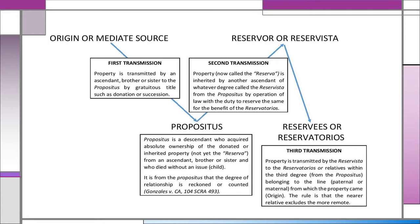Here is an illustration of Reserva Troncal. There are three transmissions. The first is from the origin to the propositus. In the first transmission, the property is transmitted by an ascendant (origin), brother or sister, to the propositus by gratuitous title such as donation or succession. The propositus is a descendant who acquired absolute ownership of the donated or inherited property from an ascendant, brother or sister, and who died without an issue — meaning the propositus died without a compulsory heir, without a spouse, or a child.